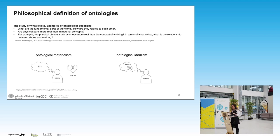Over time there were two major branches of philosophical ontology. The first is ontological materialism — the belief that material things such as particles, chemical processes, and energy are more real than the human mind. The second is ontological idealism, where the human mind and human consciousness are considered more real than material things, and reality is constructed in the mind of the observer. That said, this is not the definition used directly in data science, even though there are some overlapping areas.